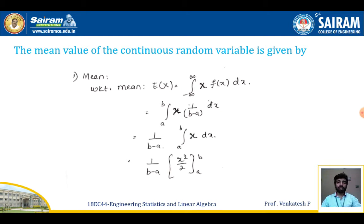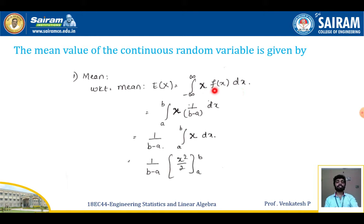We know how to find the mean for a continuous random variable. Mean is also called the expectation of the random variable. The formula is E(x) = integral from minus infinity to plus infinity of x·f(x) dx. Replacing f(x) = 1/(b - a) over the interval (a, b), we get the integral from a to b of x · 1/(b - a) dx. Since 1/(b - a) is a constant, I take it outside and integrate only x.